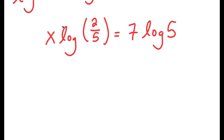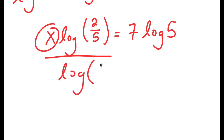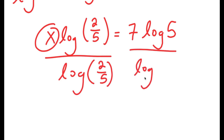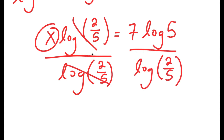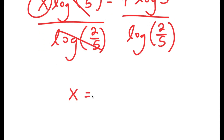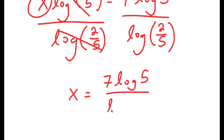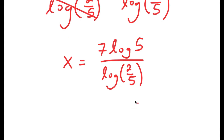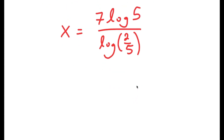Now from here we want to find the value of x, so we divide both sides by log(2/5). These cancel out and I get x is equal to 7 times log 5 over log(2/5). And we have our answer here.